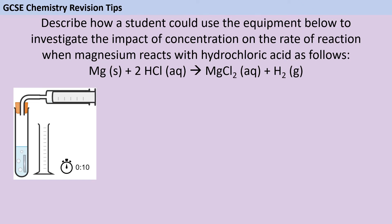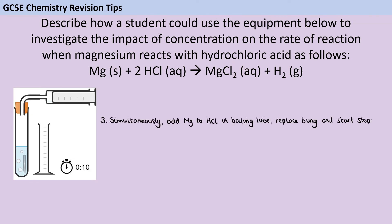Now let's look at the method you're going to write. The number one most important thing when writing your method is that it will give you valid data that allows you to answer the question. Although it might be OK to miss out a small detail here and there, if any steps you've missed mean that at the end of the investigation you wouldn't be able to answer the question — what is the impact of changing concentration on the rate of reaction? — then you'll be capped at a level two answer with a maximum of four marks. So think carefully about what the absolutely vital steps are. The chemical reaction needs to take place, so somewhere in your method describe how you add the magnesium to the acid and assemble things to collect the gas.